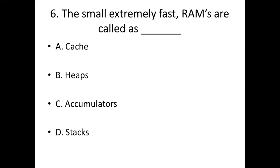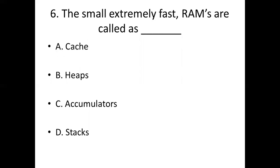Sixth bit. The small, extremely fast RAMs are called as dash. Option A, cache. Option B, chips. Option C, accumulator. Option D, stacks. Answer: Option A, cache.